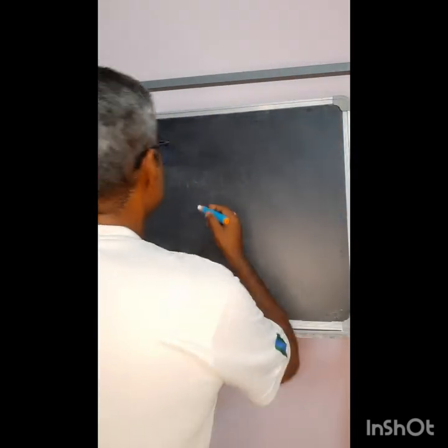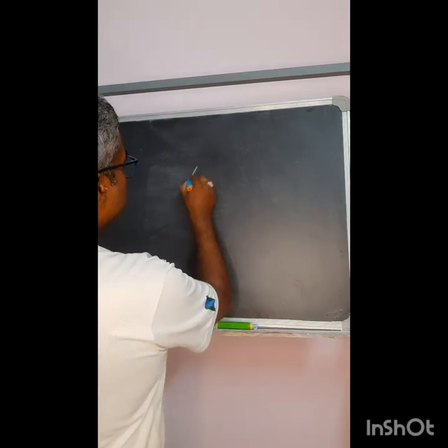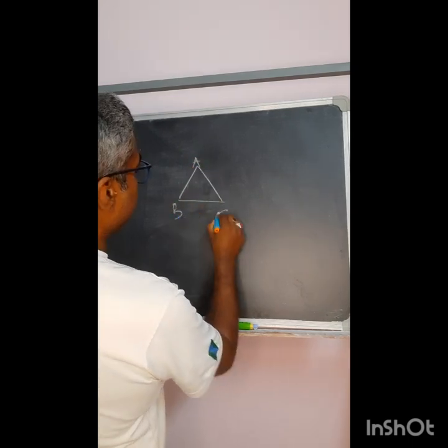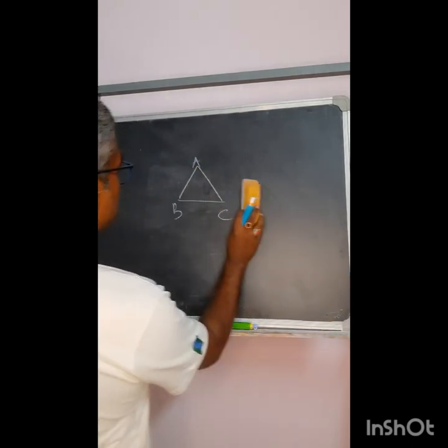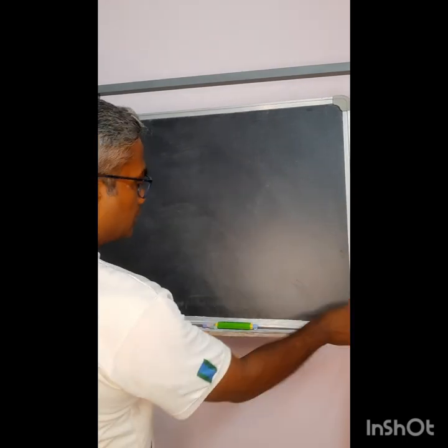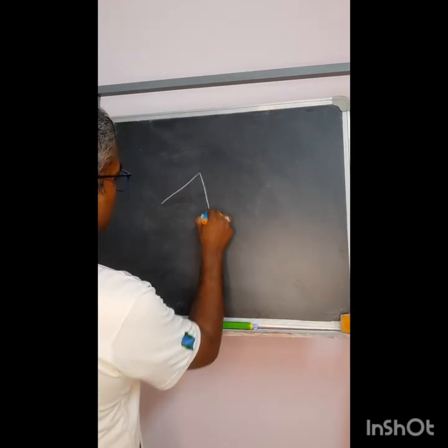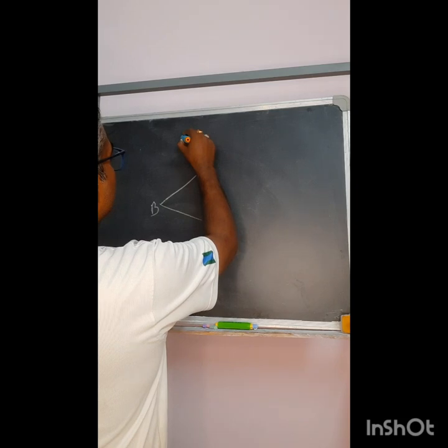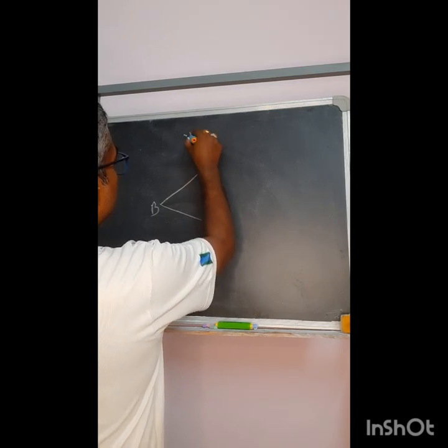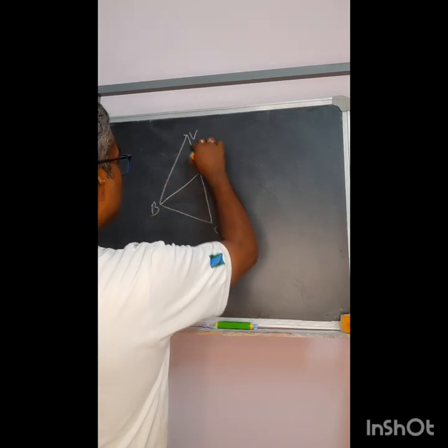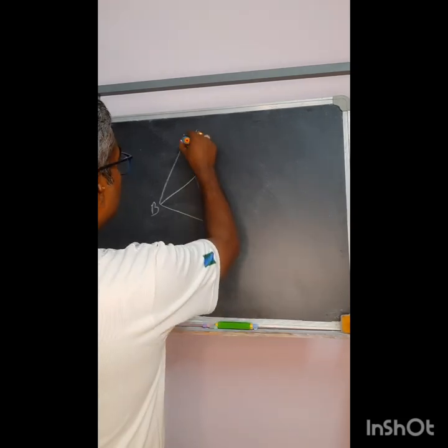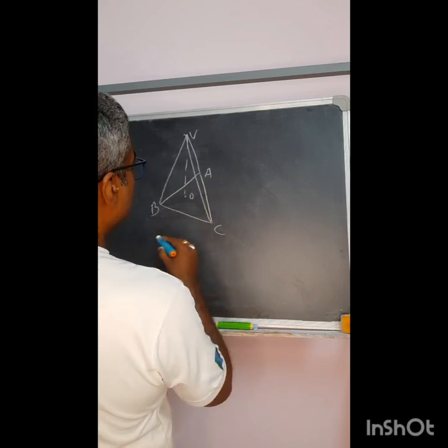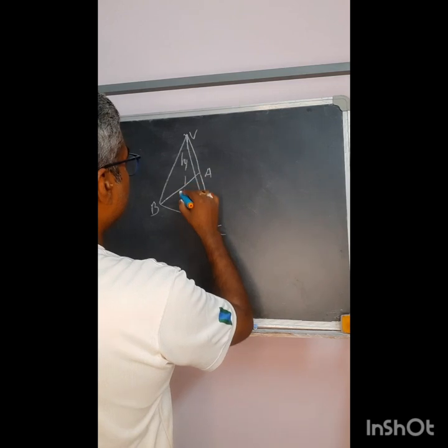So let us start with the problem. Today's problem says there is a pyramid whose base is an equilateral triangle ABC. The vertices of that, let me draw it something in a tilted fashion. Let ABC be the triangle, and the vertical of the pyramid V from where the slant corners are connected, and a vertical is drawn on the plane ABC which is meeting at O and it shows the height of the pyramid.